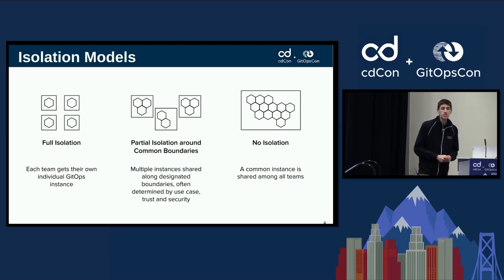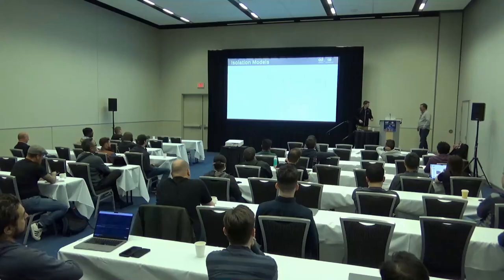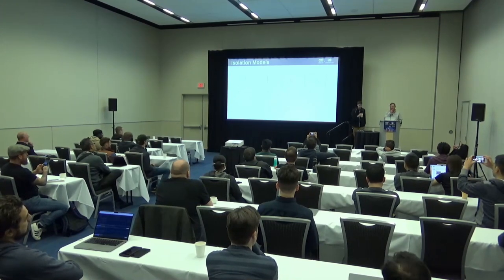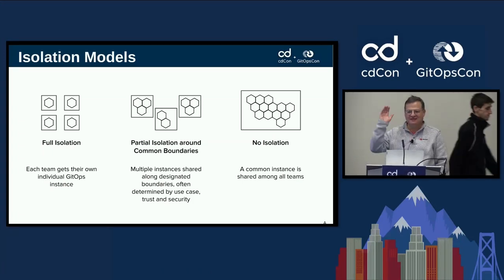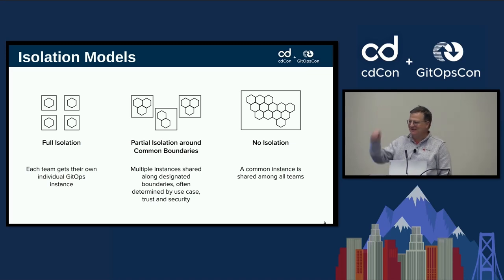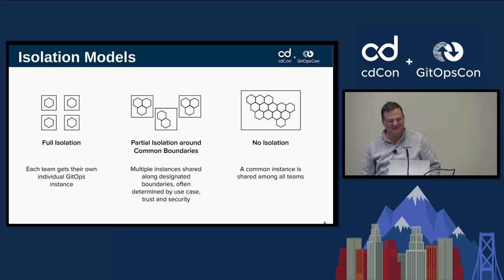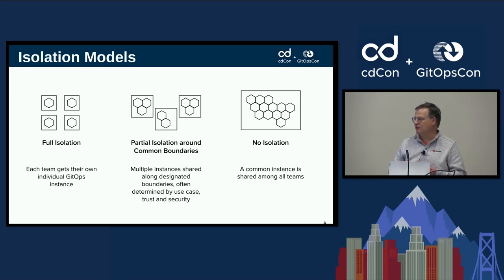There are multiple isolation models to consider. Building on what Andrew said, it's not only about security — it's also about misconfiguration and human mishaps. From a full isolation perspective, everybody gets their own GitOps instance. But that can be somewhat expensive. The most common model is partial isolation around boundaries — these can be team boundaries or situational boundaries for different use cases. And finally, no isolation, where everybody shares the same instance.